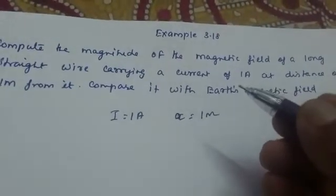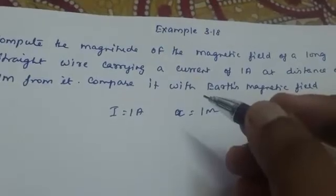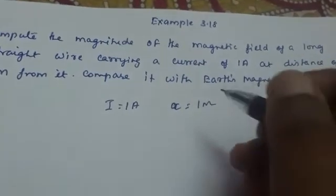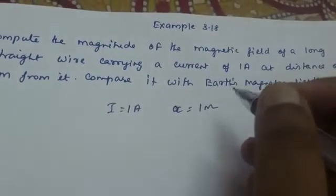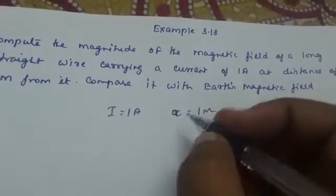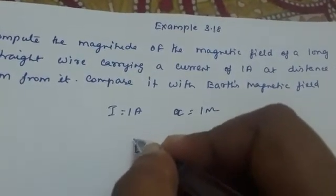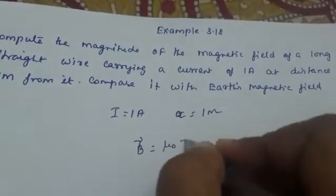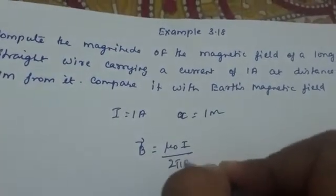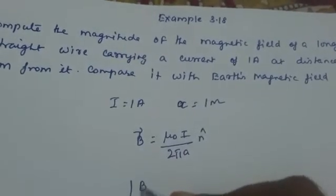We have to find out the magnitude of magnetic field of a long straight current carrying conductor. The magnitude of magnetic field can be found out using the formula: B vector equals μ₀I by 2πa into n unit vector. Now we have to find out the magnitude.